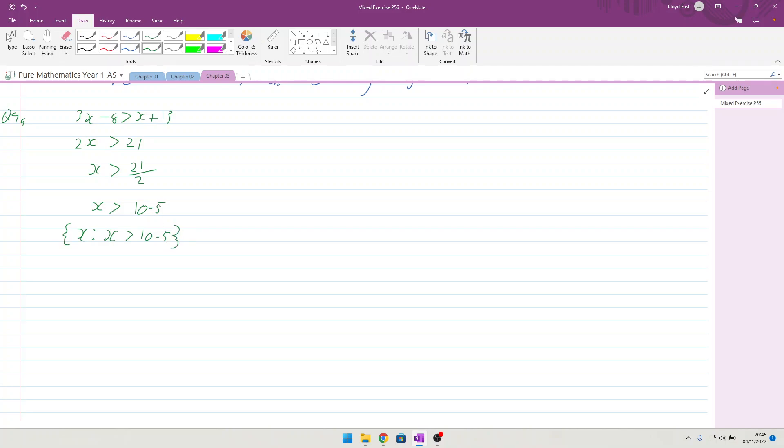For part B, we're looking at solve the inequality x squared minus 5x minus 14 is greater than 0. If we were to put this into the calculator for the quadratic using coefficients of 1, minus 5, and minus 14, then we get values of x equals 7 and x equals minus 2.